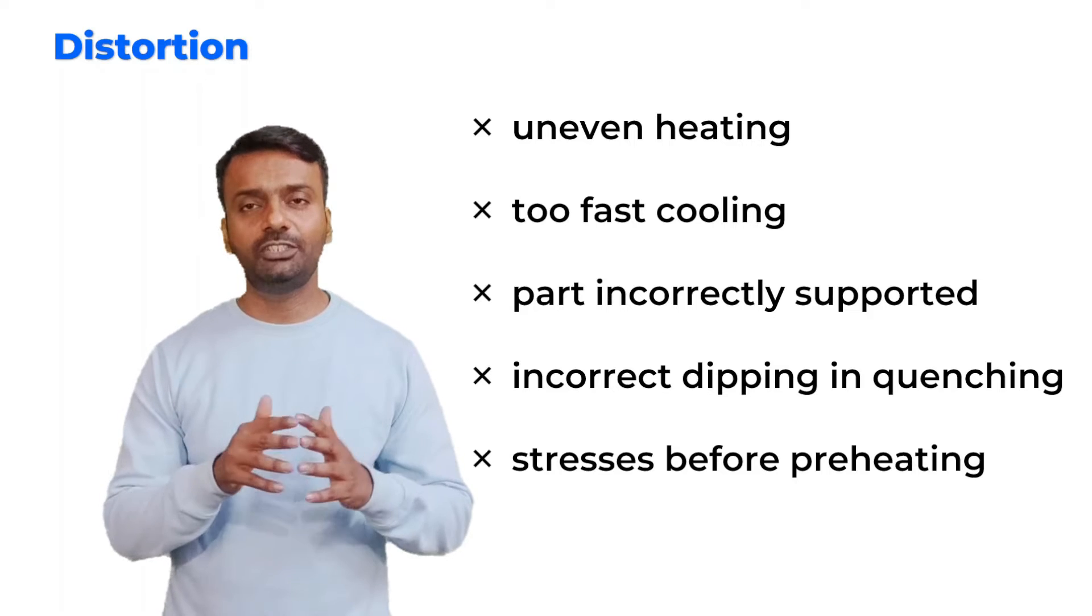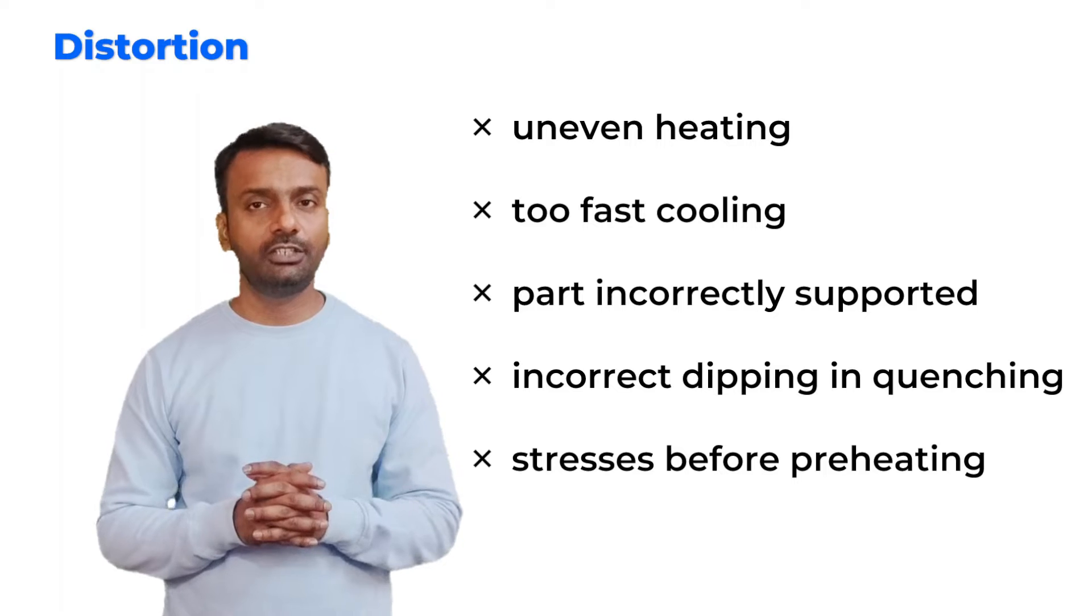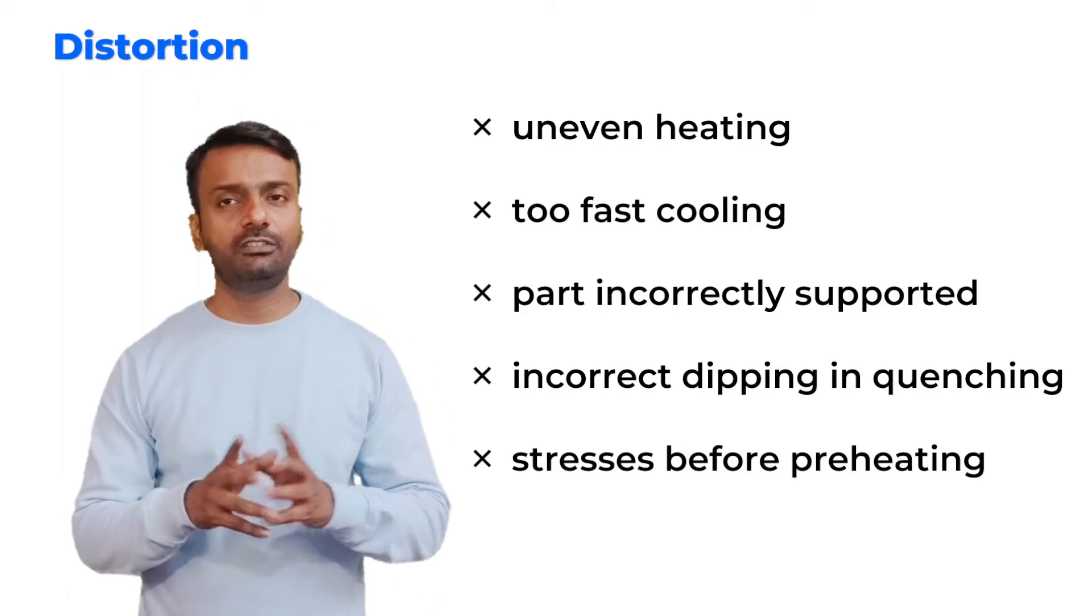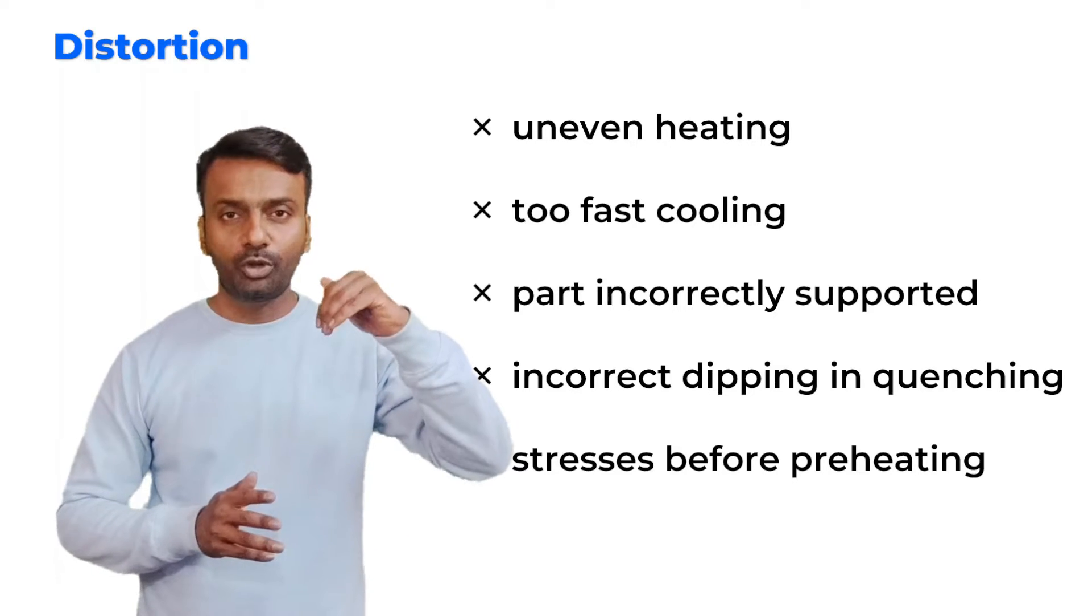When you are quenching the sample, the sample will have different properties and because of this there will be a change in volume of the sample. Sometimes we do too fast cooling and even in this we will have a distorted sample. The cooling should be at a proper rate.